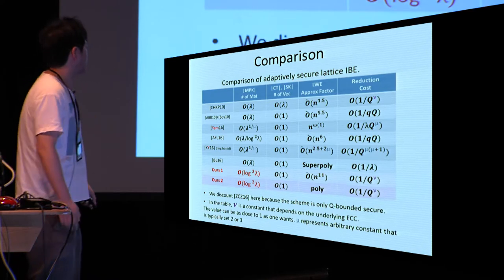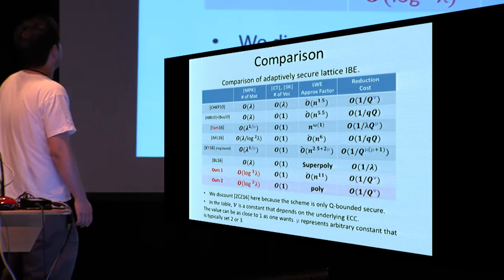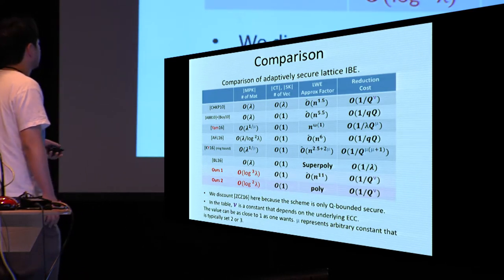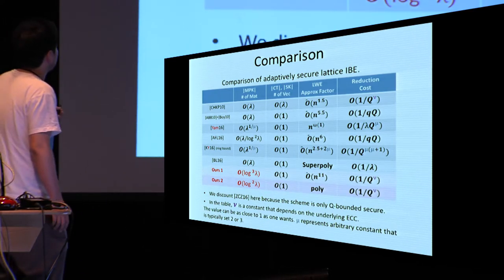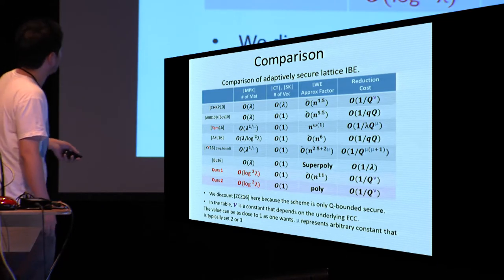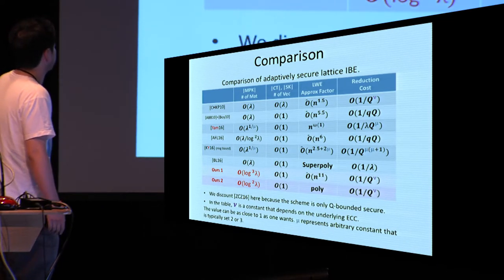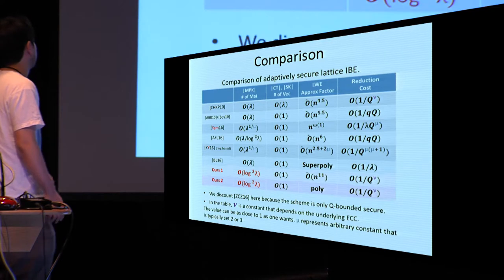This is our final scheme, which is exactly the same as the template construction except that H(ID) is computed using fully homomorphic computation. Our scheme achieves the first polylogarithmic master public key size among all lattice-based adaptively-secure schemes.